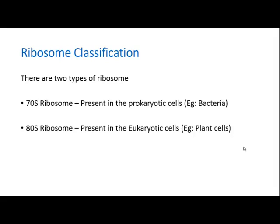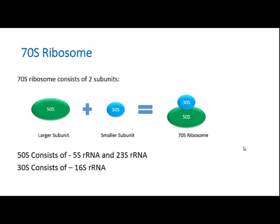Ribosome classification: there are two types of ribosomes — 70S ribosomes and 80S ribosomes. The 70S ribosome is present in prokaryotic cells like bacteria, and the 80S ribosome is present in eukaryotic cells, such as plant cells and animal cells.